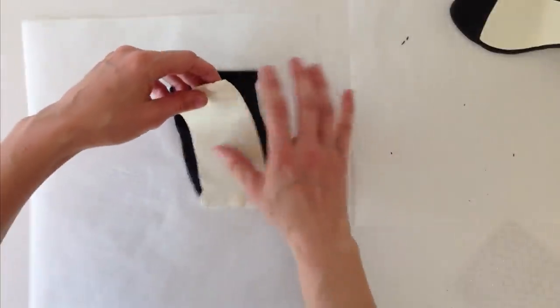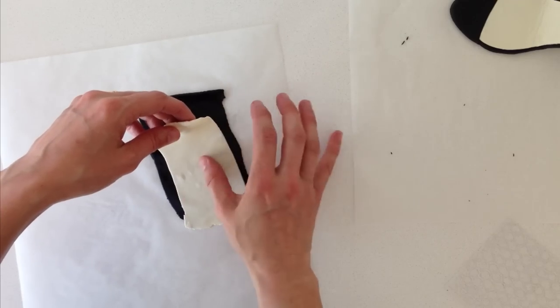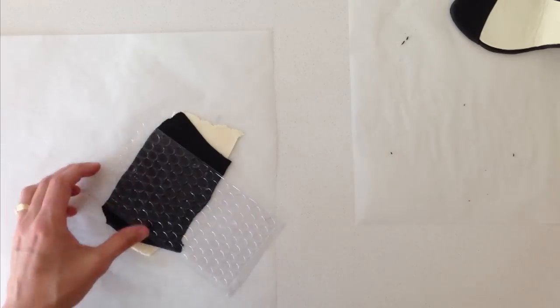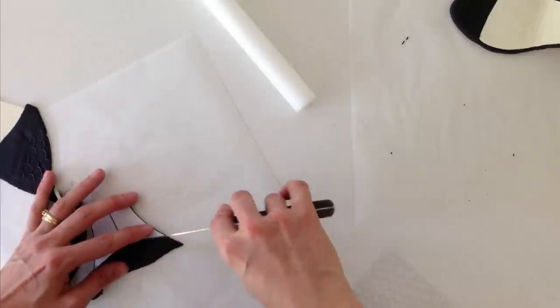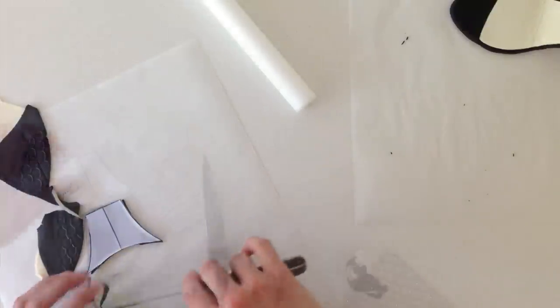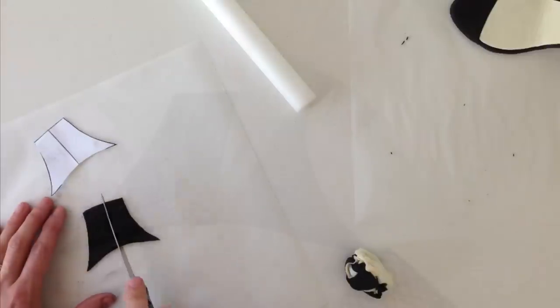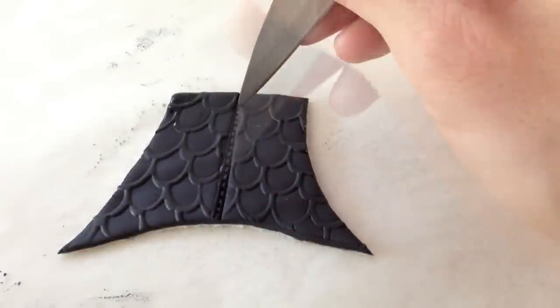Roll out some black and then some thin cream fondant and using a tiny bit of water, put the cream onto the black, then flip it over and rub the texture mat on top. Cut it out using the template and then use your knife to indent down the back in two straight lines, then use the very tip of the knife to make stitching marks down the middle.